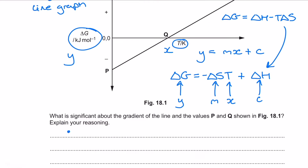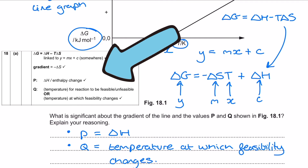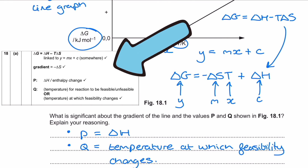In answering the full question I should have put all of that in the answer space, but I'll flash up the formal mark scheme at the end. The value of P on the graph, which is the intercept of the straight line across the y-axis, is going to be delta H because that's C from Y equals MX plus C. From our knowledge that delta G must be less than or equal to zero for a reaction to be feasible, point Q — where the line crosses the x-axis — is the temperature at which the feasibility of the reaction changes.